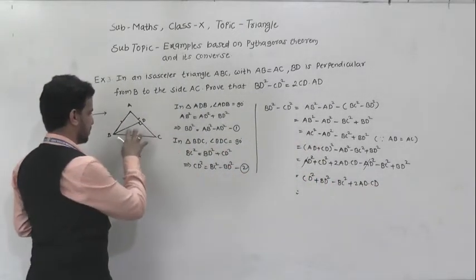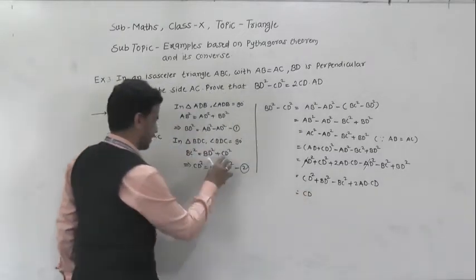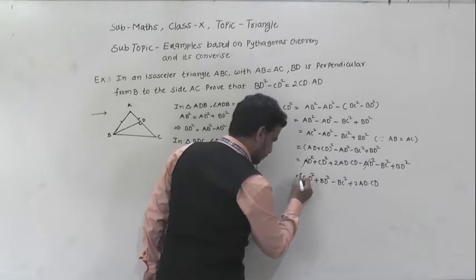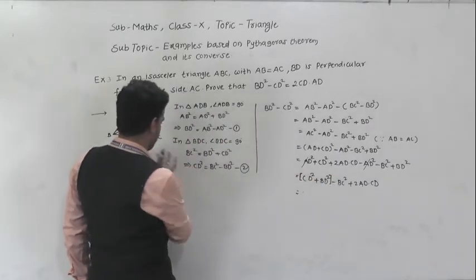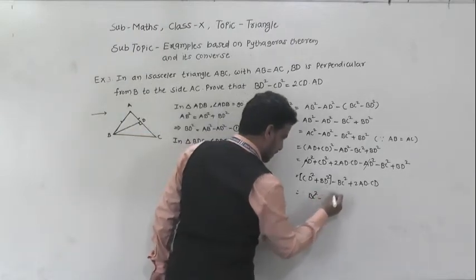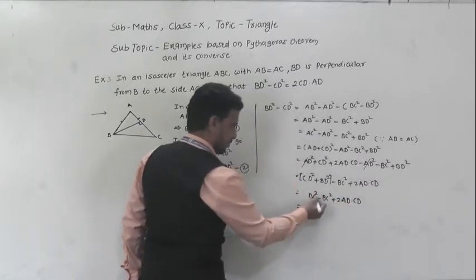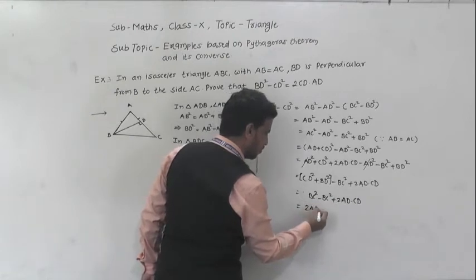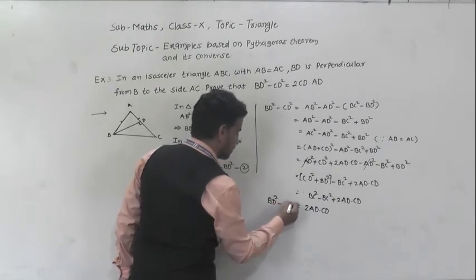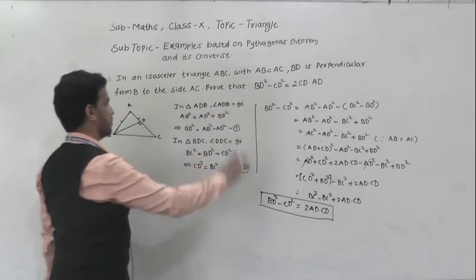CD squared plus BD squared equals BC squared from triangle BDC. So substituting: BC squared minus BC squared plus 2AD into CD. The BC squared terms cancel, leaving 2AD into CD. Therefore BD squared minus CD squared equals 2AD into CD. This completes the proof.